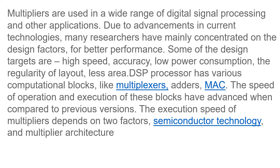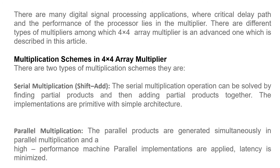The execution speed of multipliers depends on two factors: semiconductor technology and multiplier architecture. There are many digital signal processing applications where the critical delay path and the performance of the processor lies in the multiplier. Among the different types of multipliers, the 4 by 4 array multiplier is an advanced one, which is described in this article.